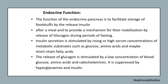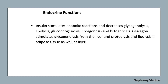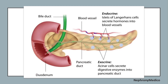Regarding endocrine function: the endocrine function is to facilitate the storage of food by releasing insulin. Insulin secretion is stimulated by rising or high serum concentrations of metabolic substances such as glucose, amino acids, and possibly fatty acids. The release of glucagon is stimulated by low concentrations of blood glucose, amino acids, and catecholamines, and is suppressed by hyperglycemia and insulin. Insulin stimulates anabolic reactions and decreases glycogenolysis, lipolysis, gluconeogenesis, ureogenesis, and ketogenesis. Glucagon stimulates glycogenolysis from the liver and proteolysis and lipolysis in adipose tissue as well as liver. This picture shows the exocrine and endocrine parts and their functions.